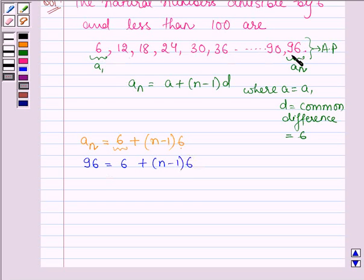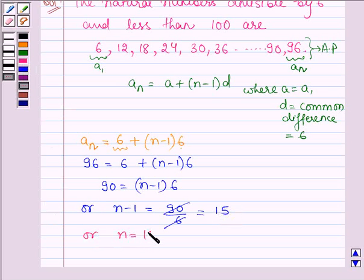We are trying to find the number of terms here. So, this implies that 90 is equal to (n minus 1) into 6, or n minus 1 is equal to 90 divided by 6, which is equal to 15, or n is equal to 16. So, the number of terms of this AP series is equal to 16.